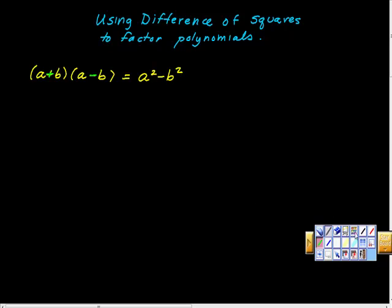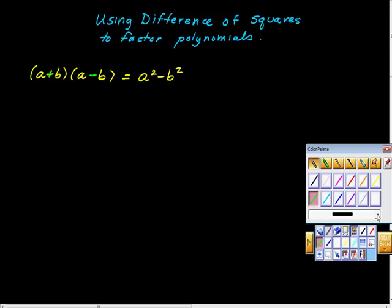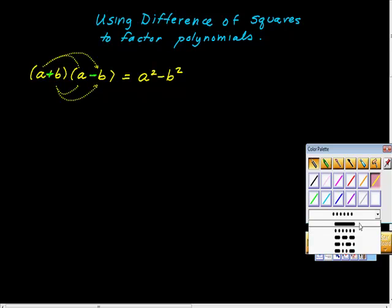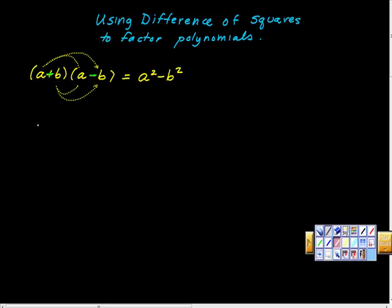If you just look at it using FOIL, it's actually pretty clear. Let's just look at what that would look like. So we're going to do our FOIL here. a times a, then a times negative b, then b times a. If we just follow that through, a times a is a squared.